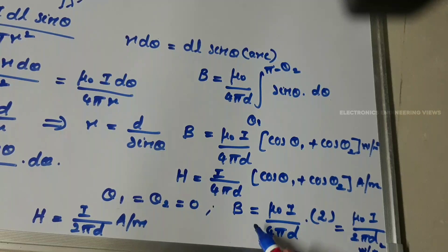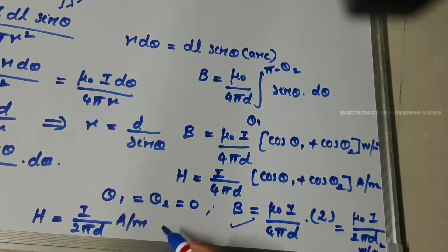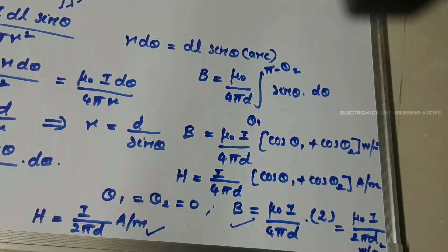So these equations for B and H are the magnetic flux density and magnetic field intensity for infinite length conductors. Thank you.